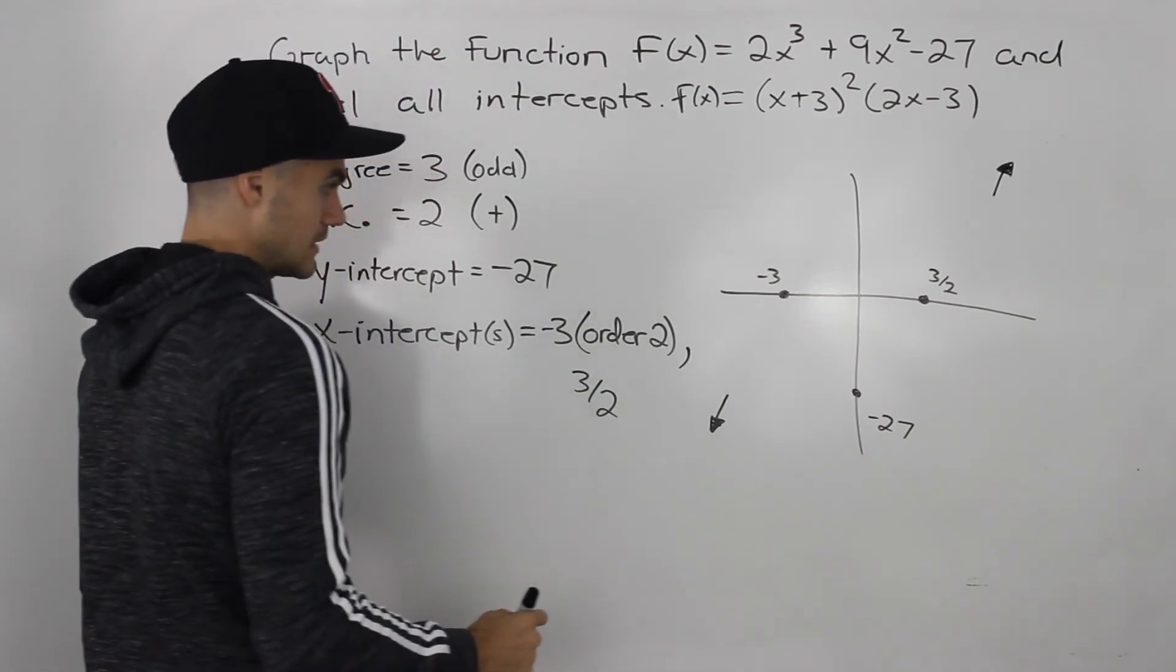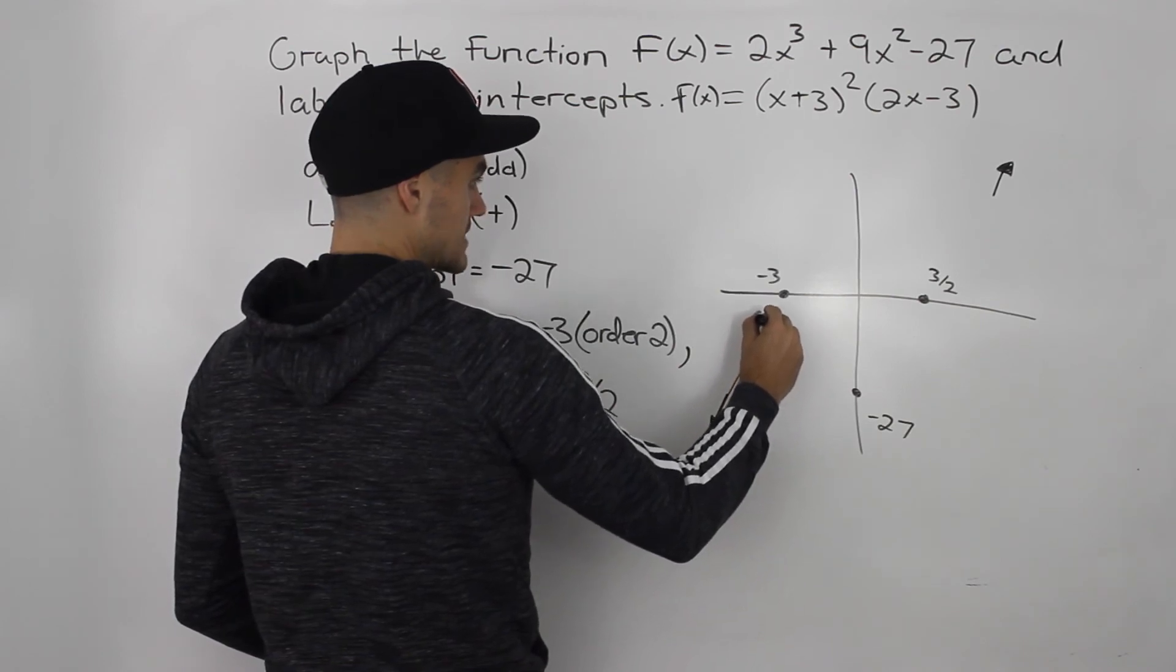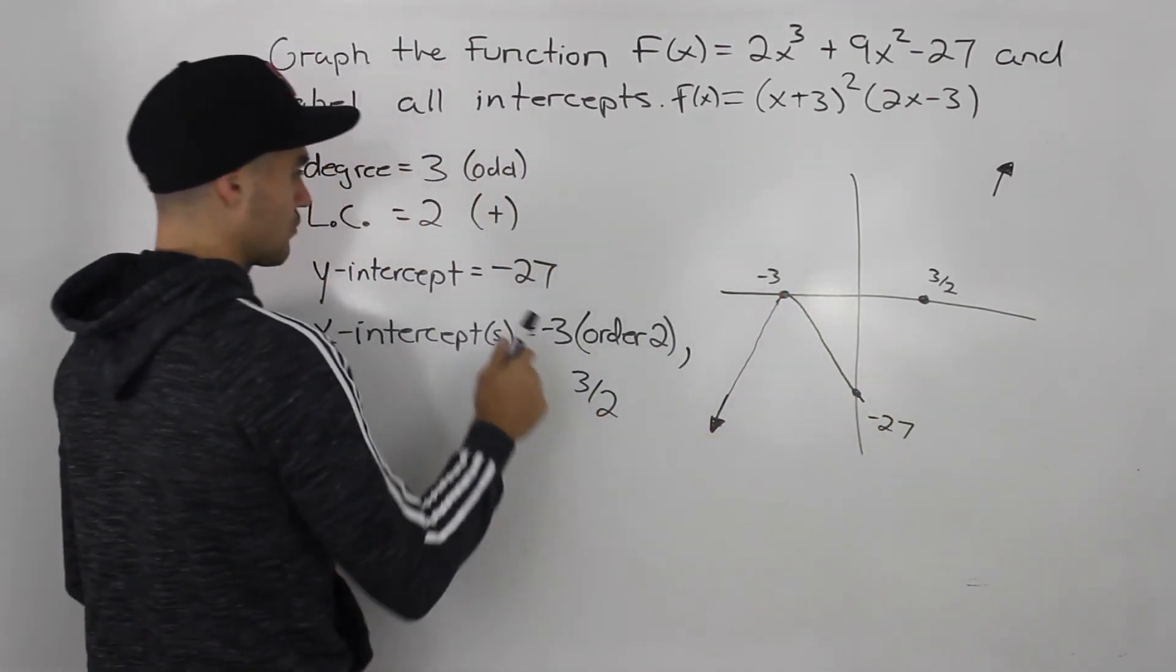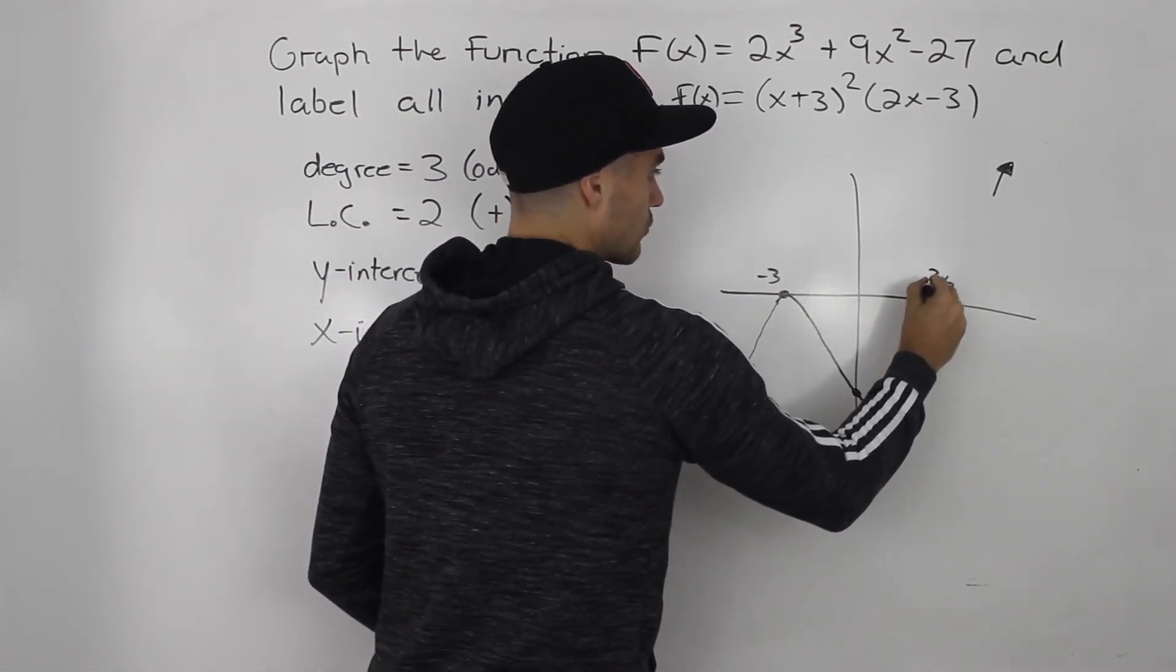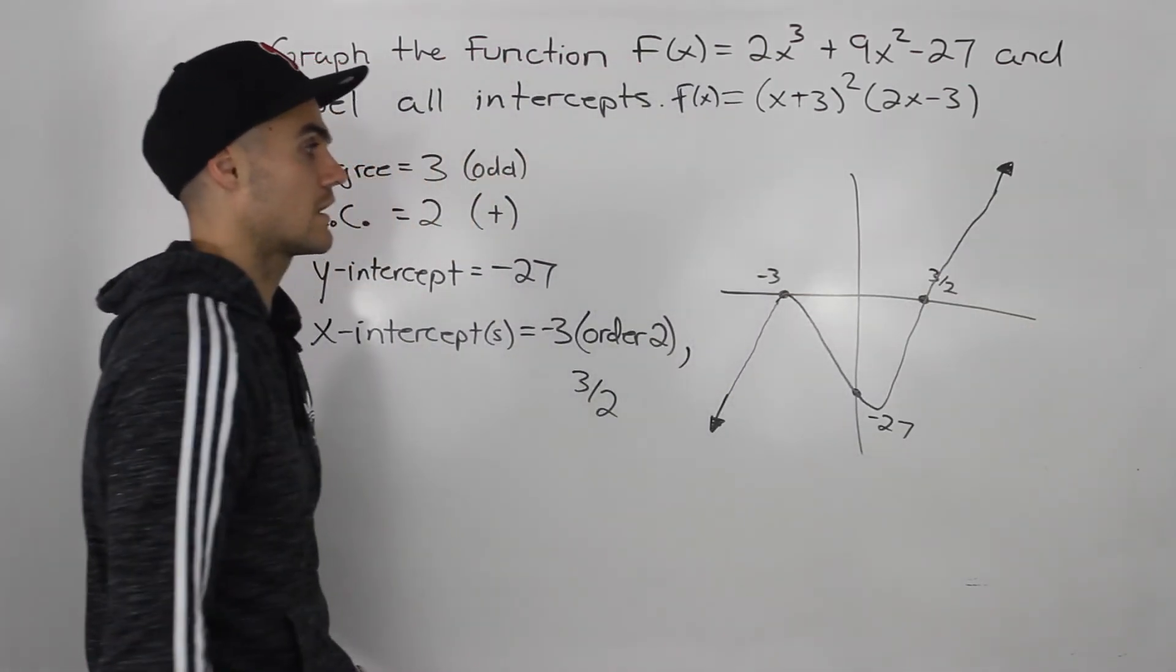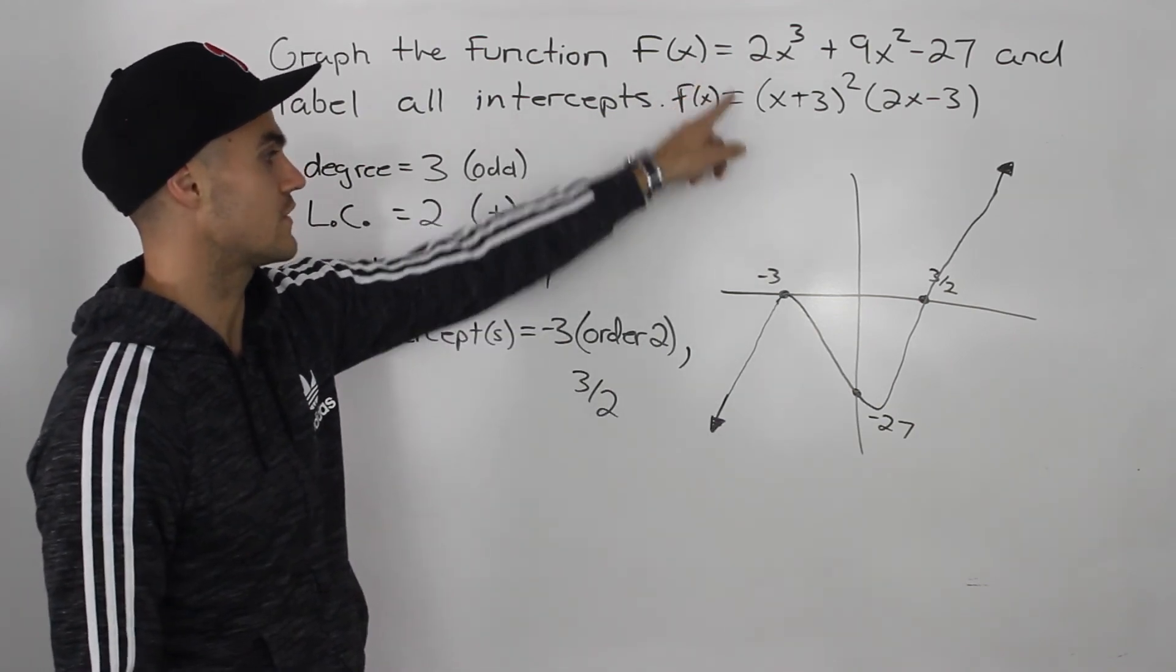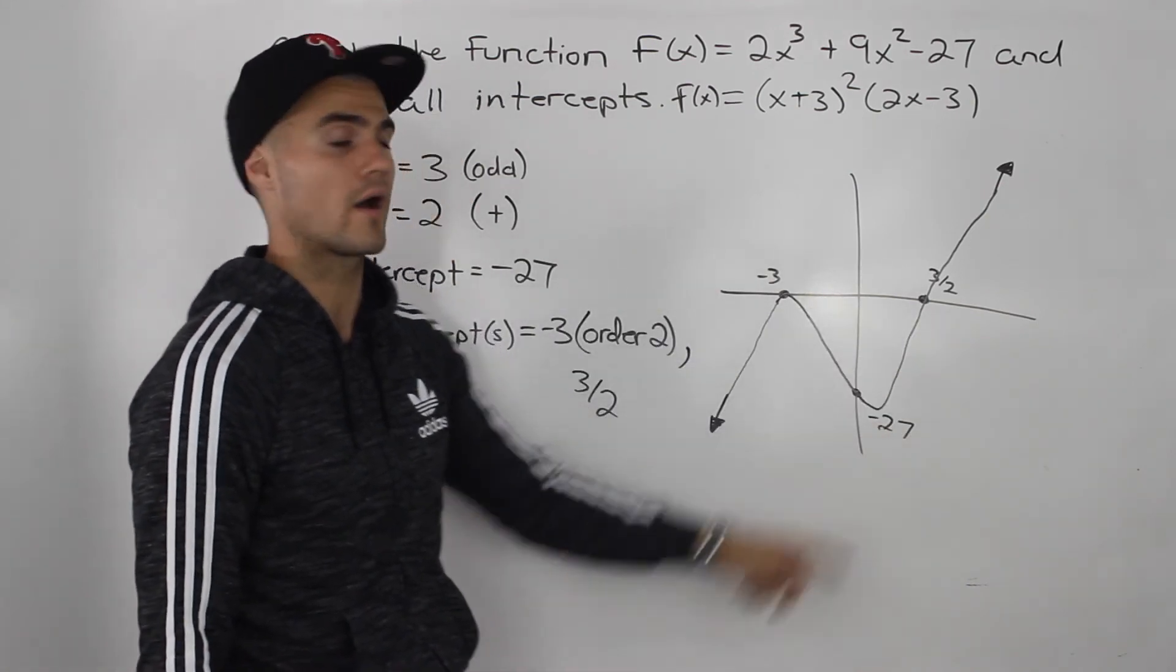So let's sketch this. So as we move up, we're going to hit this x-intercept here. Notice this negative 3 has an order of 2. So it's going to bounce off that negative 3. Then it's going to go through that y-intercept of negative 27, and then go through that x-intercept of 3/2, and then hit that other end behavior in the first quadrant. So that there is a potential graph of this function. We labeled all of the intercepts, the 2 x-intercepts, and the y-intercept.